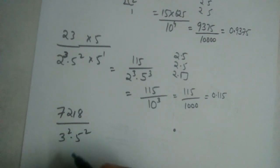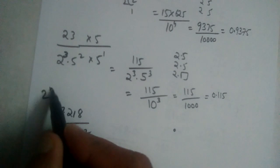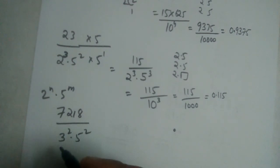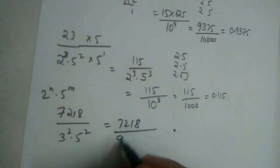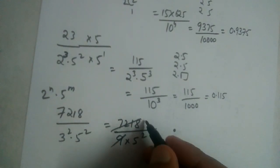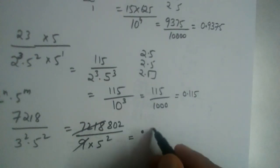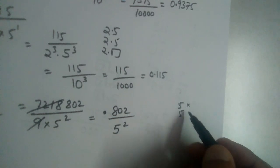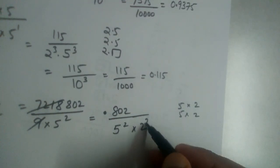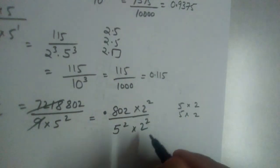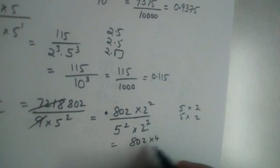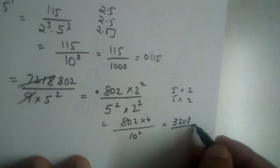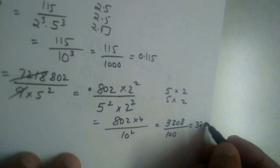For 7218/(3² × 5²): students might think this is non-terminating because of the 3², but 7218 divided by 9 (which is 3²) = 802. So it simplifies to 802/5². Now multiply numerator and denominator by 2²: 802 × 4 = 3208, divided by 100, giving 32.08.